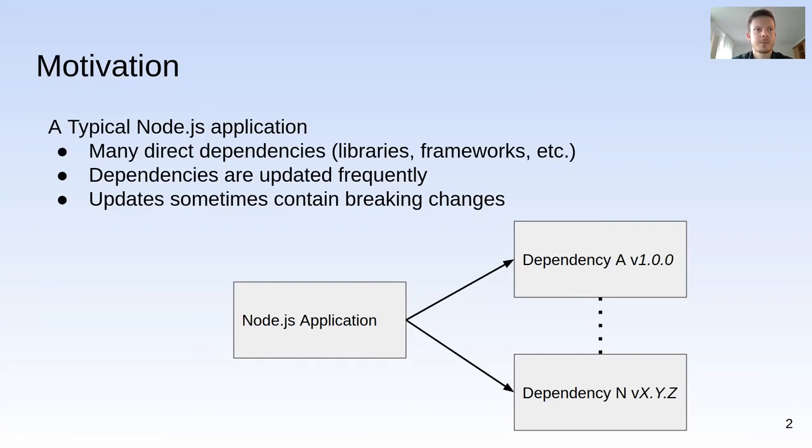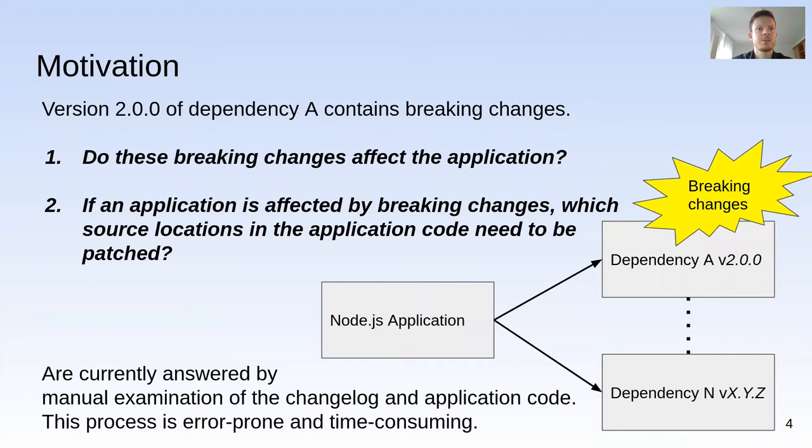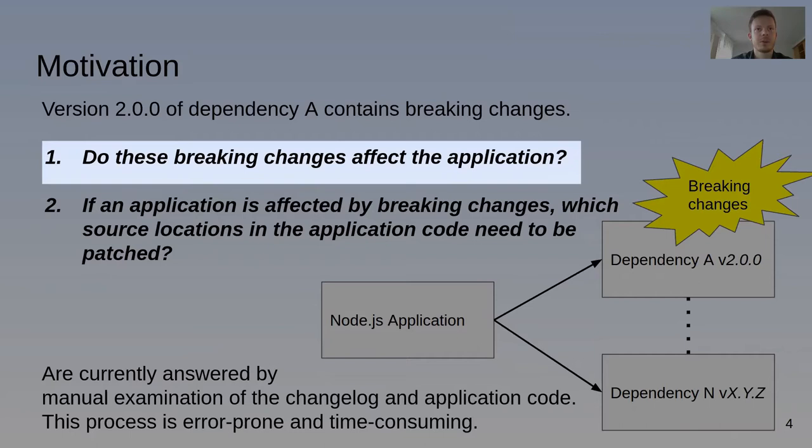Consider this example. The developer of dependency A releases version 2 to replace version 1. This new version contains security fixes and performance improvements, so naturally the application developer would like to apply this update. However, the update also contains breaking changes, leaving the application developer with the often considerable task of determining which breaking changes could affect the application.